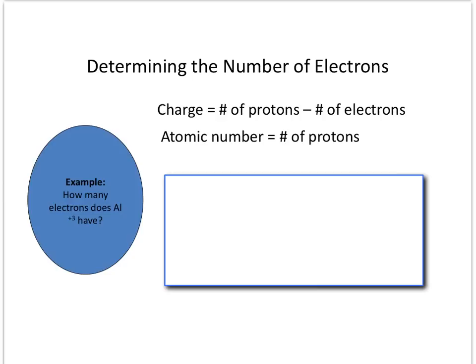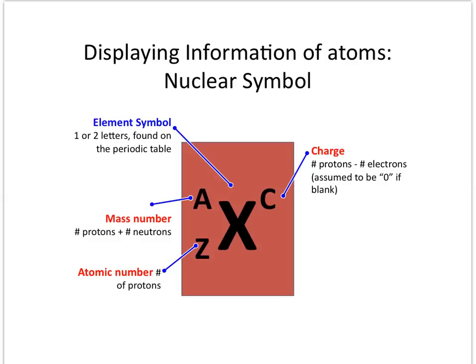Now you try. How many electrons does the aluminum ion have? Turn the vodcast off, do the problem, and come back on to find the answer. So you can see it has a charge of plus 3, and that equals the number of protons. As we go to the periodic table, the atomic number for aluminum is 13 — that's how many protons it has — minus the electrons E. We bring the negative 13 over to the other side, and that gives us 10 as the number of electrons.